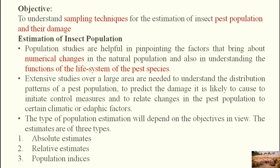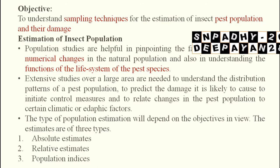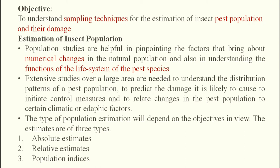In population studies, we will see the numerical changes — whether the population is increasing or decreasing, and why. That means what is the role of environmental factors, both biotic and abiotic, in changing the number of a particular pest or insect population. We can understand distribution patterns, how much damage they can cause, whether it has reached ETL level, and what measures should be implemented.